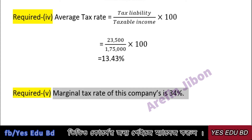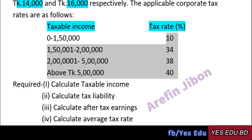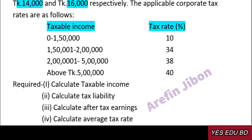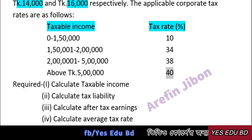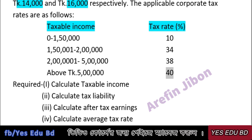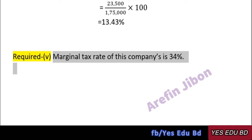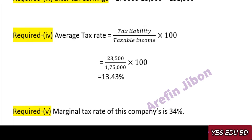What is the marginal tax rate? The tax rate steps were 10%, 34%, 38%, and 40%. The marginal tax rate — if we go up to 40%, we can charge 34%. So the marginal tax rate is 34%.